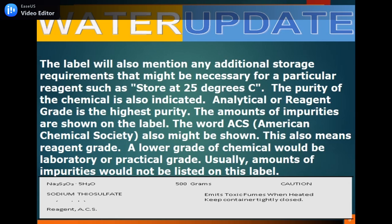A lower grade of chemical would be laboratory or practical grade — usually, amounts of impurities would not be listed on this label. For example, sodium thiosulfate: it's a reagent, it's written as ACS, and it's 500 grams as mentioned on the label. The warning states: emits toxic fumes when heated — keep container tightly closed.